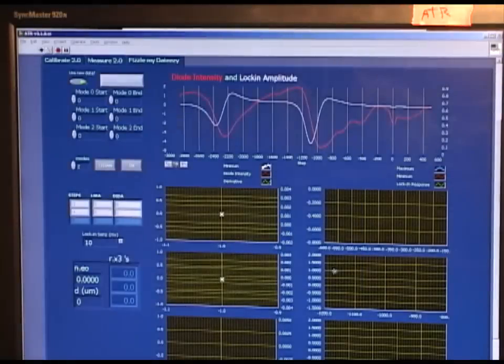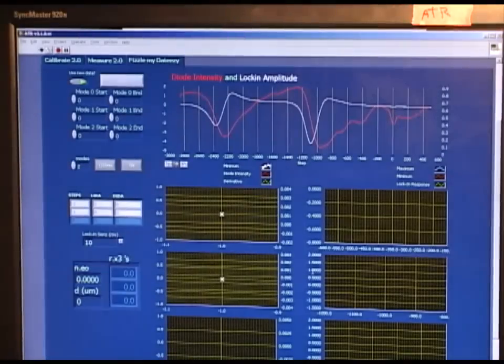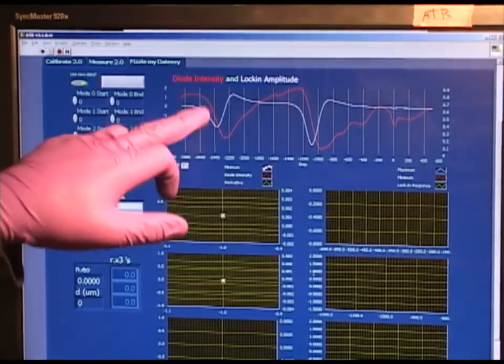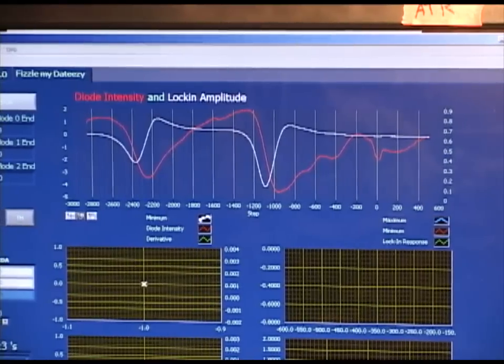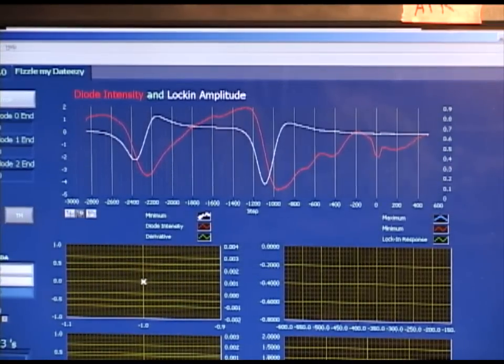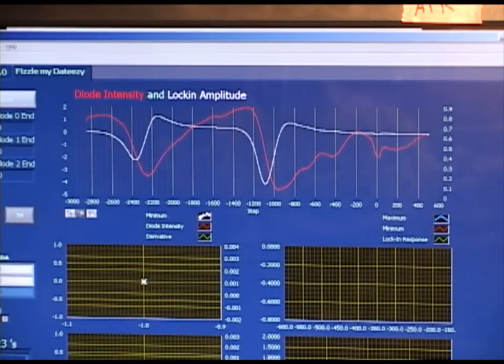When we open the data tab, we select the data that we have just taken based on the information we entered. We then see a printout of the diode intensity and lock-in amplitude here. These dips correspond to modes. From the amplitude of these modes, we can determine the R33, the thickness, and the refractive index of this particular material. It is important to note that if there are less than two modes, we must enter a thickness which we have previously determined, as thickness can only be determined from the modes if there are multiple modes.